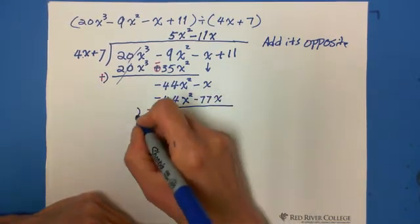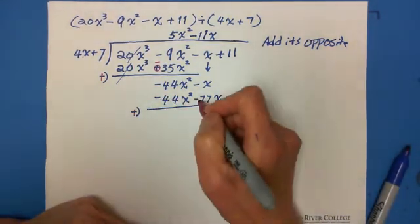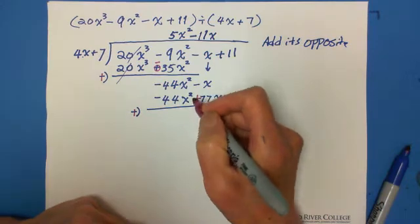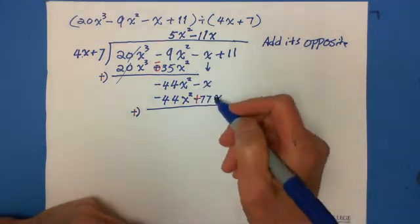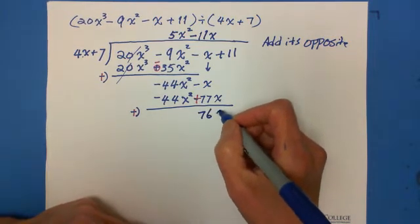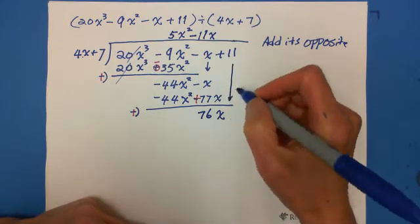Subtract, change to add its opposite. And this is x. And this is x is negative. And this is x plus 77x equals positive 76x. And I carry down 11.